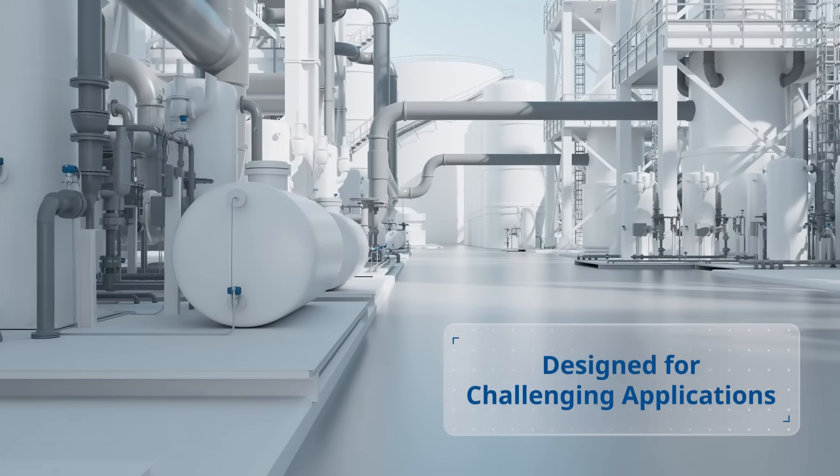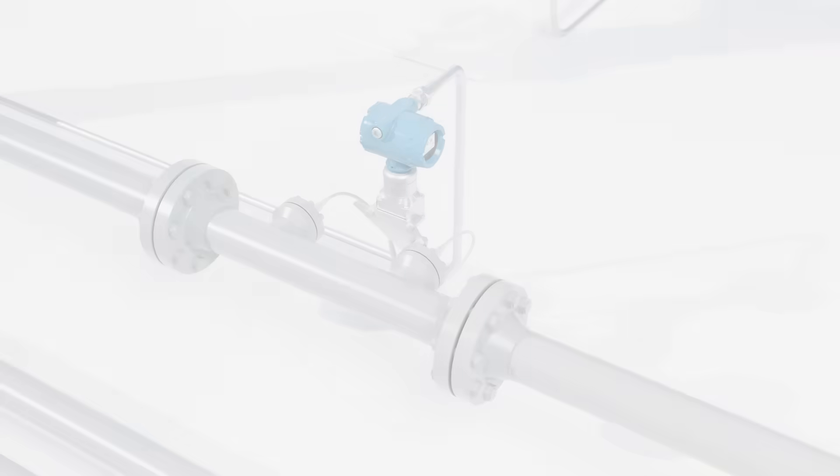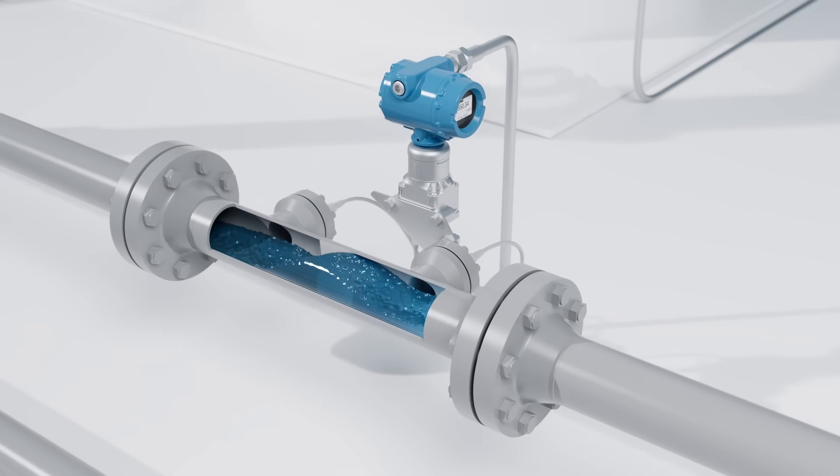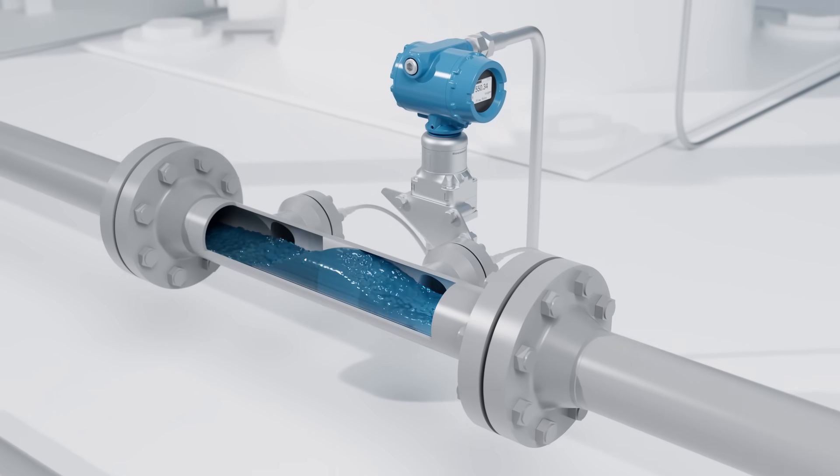Introducing the Rosemount 9195 Wedge Flow Meter. Designed as a complete solution by integrating remote seal assemblies, flow applications can be accurately and repeatably measured.